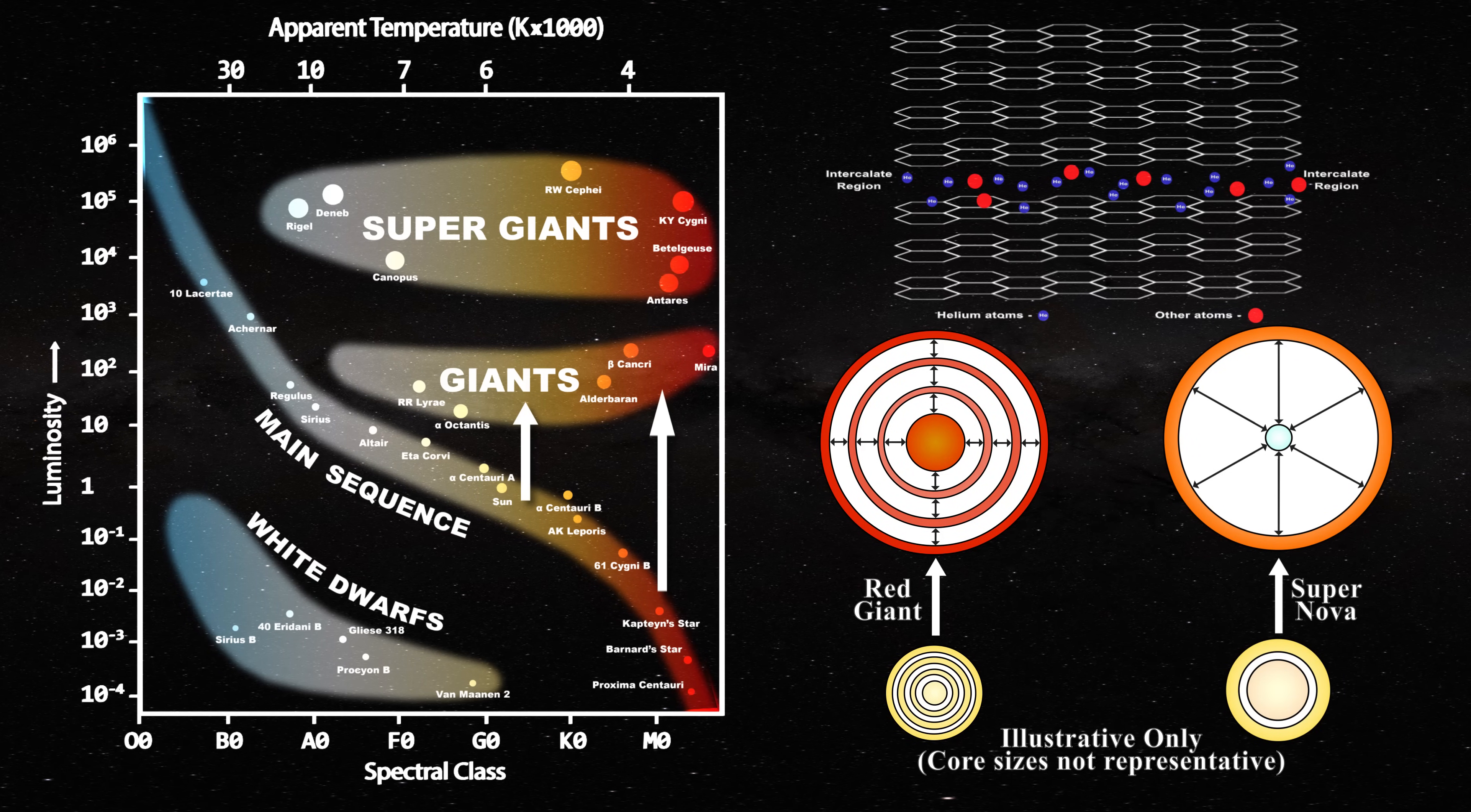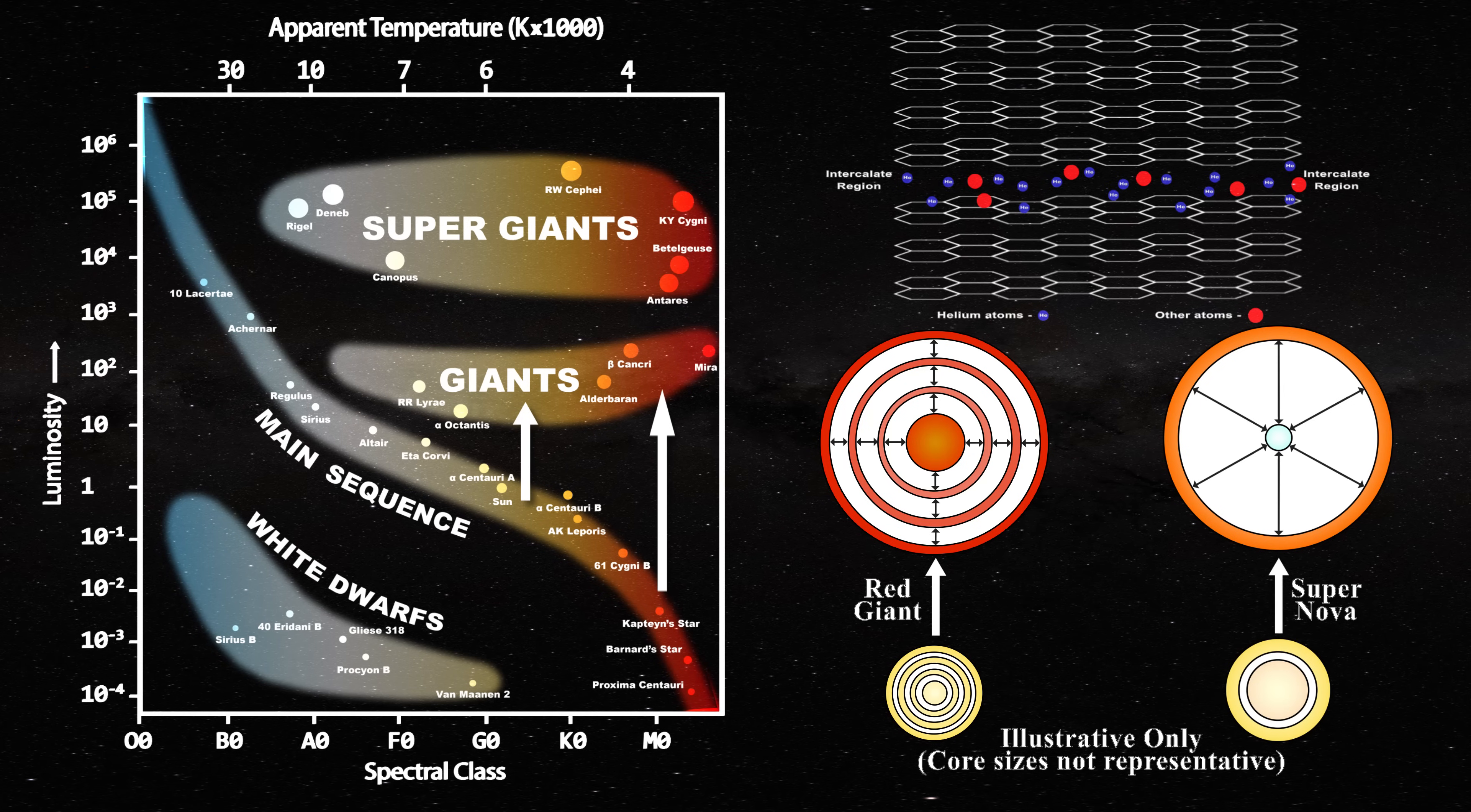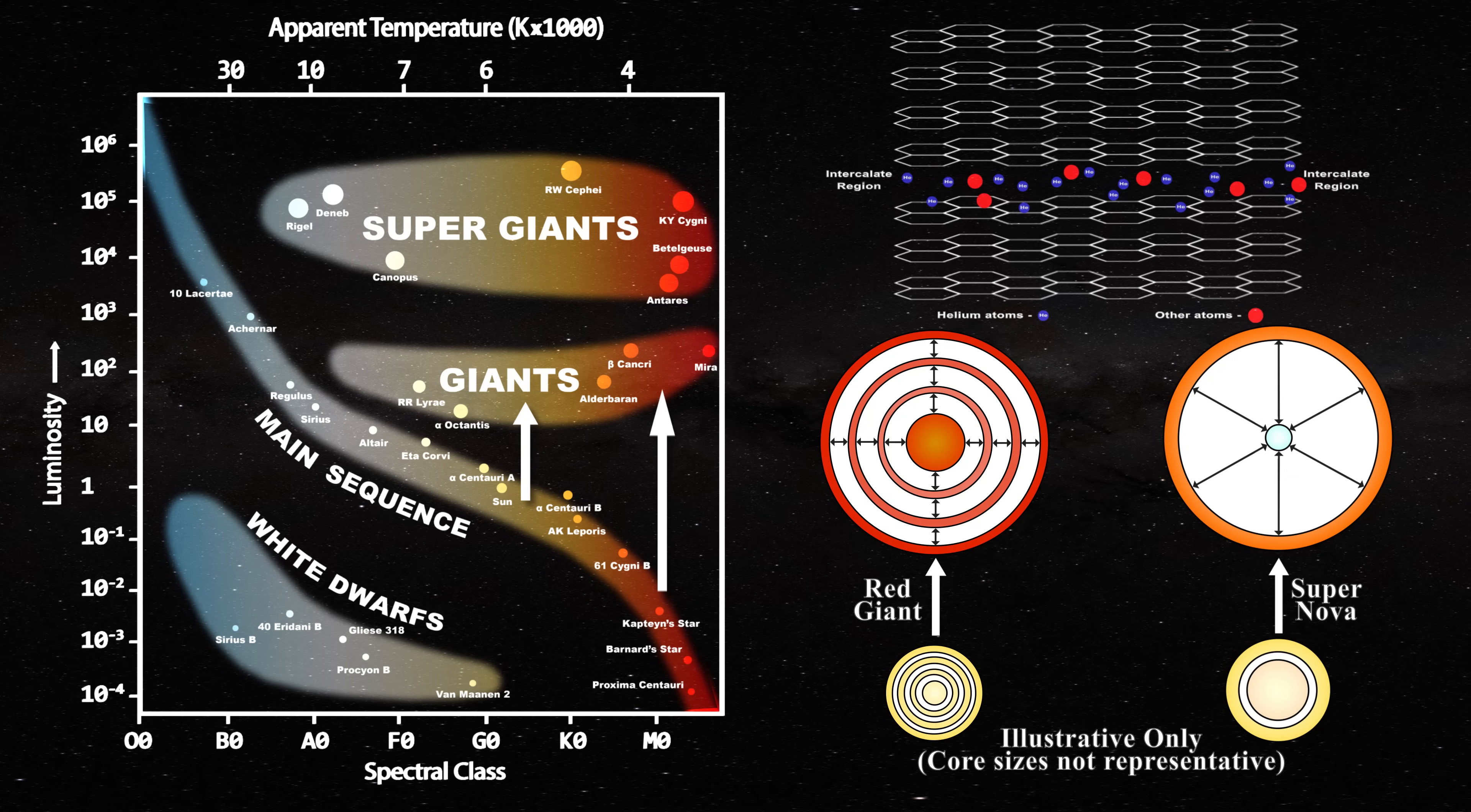Note that if intercalate regions are distributed throughout much of the interior of the star, one could form a red giant. In that case, expansion would occur slowly with different regions expanding over time, whereas violent expansion of just a few regions would form a supernova.